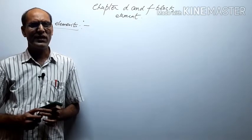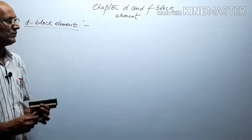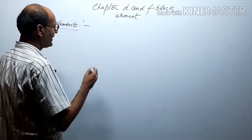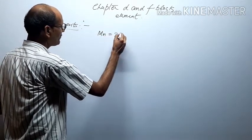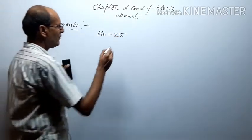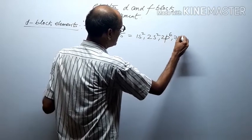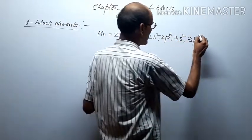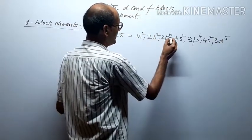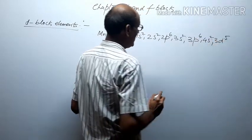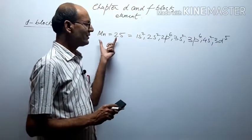There are 10 groups in the D block, from group 3 to group 12 — they are called D block elements. For example, taking manganese Mn with atomic number 25: we write the electronic configuration as 1s² 2s² 2p⁶ 3s² 3p⁶ 4s² 3d⁵. You can see that the last electron enters the D subshell, so manganese is a D block element.